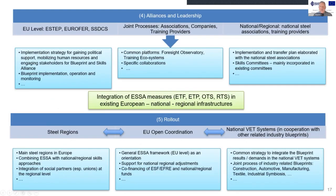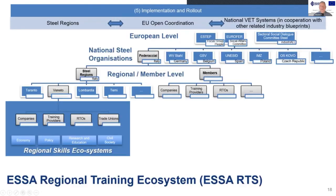Regarding alliances, leadership, and rollout — the main point is that we will integrate ESSA measures into existing European, national, and regional infrastructure as much as possible. I will come back to this tomorrow. Our implementation and rollout focuses on the European level, the national level and steel organizations, and the regional level — to develop regional skills ecosystems.